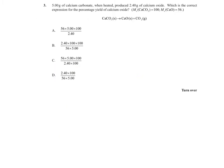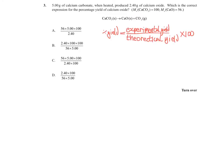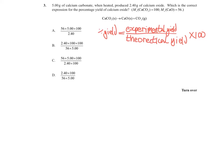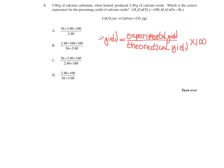Question 3: we have 5 grams of calcium carbonate which, when heated, decomposes into calcium oxide and carbon dioxide. We get 2.4 grams of calcium oxide. The formula for percentage yield is: percentage yield = (experimental yield / theoretical yield) × 100. We have the experimental yield of 2.40 and we need to find the theoretical yield using moles.